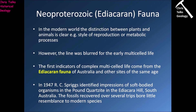This process brings us to the Neoproterozoic — the late Proterozoic — and more importantly the Ediacaran fauna. In the modern world the distinction between plants and animals is clear: differences in reproduction, metabolic processes, and organelles inside cells. However, the line was blurred for early multicellular life. The first indicators of complex multi-celled life come from the Ediacaran fauna of Australia and other sites of the same age. In 1947, R.C. Spriggs identified impressions of soft-bodied organisms in the pound quartzite in the Ediacaran Hills of South Australia, and the fossils recovered bore little resemblance to modern species.